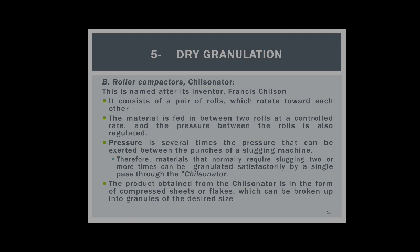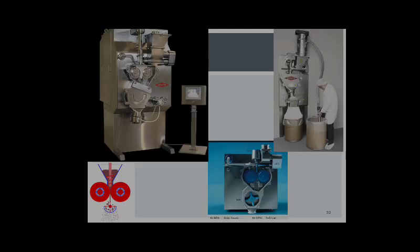Roller compactor or chilsonator: it consists of a pair of rolls which rotate towards each other. The material is fed in between the two rolls at a controlled rate, and the pressure between the rolls is also regulated.